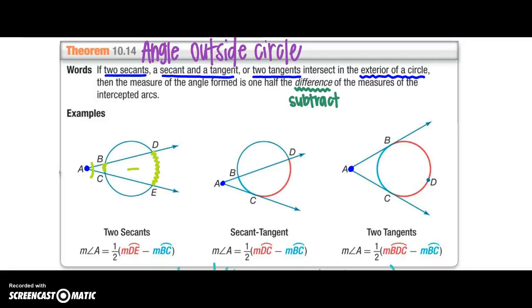I also have a secant and a tangent. So notice AC is my tangent because it only hits it one time. AD is my secant because it hits it two times. So my angle A is going to equal one half of my big arc minus my small arc.